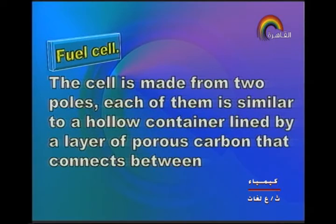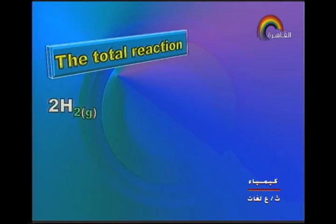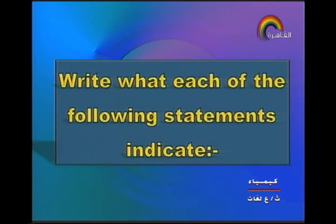The fuel cell is made from two poles, each similar to a hollow container lined by a layer of porous carbon connecting the internal chamber and the electrolyte inside it, which is hydrated potassium hydroxide. The total reaction: 2H₂ + O₂ gives 2H₂O, and the EMF of the cell is 1.23 volts.